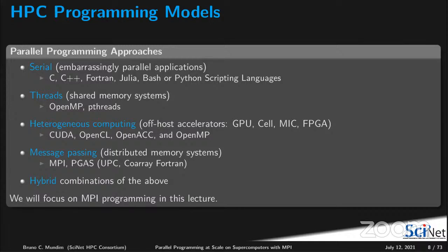In shared memory systems with lots of cores sharing memory, you can spawn threads such that each thread does computation using a particular core. The most common models are OpenMP and pthreads. You can also have heterogeneous computing — you write a different set of commands to dispatch instructions to off-host accelerators like GPUs, with examples including CUDA, OpenCL, OpenACC, and OpenMP offloading. We're not going to talk about those.